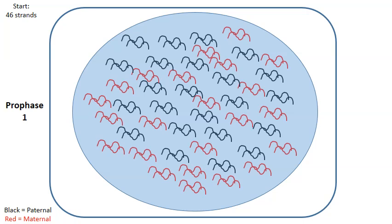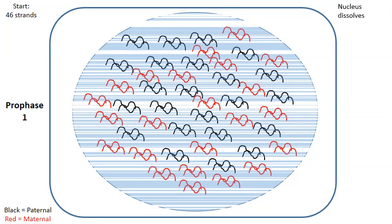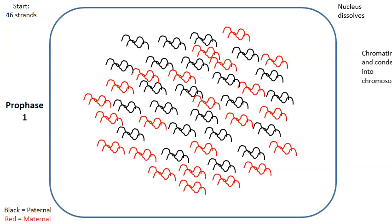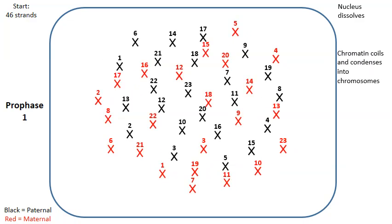So let's start with prophase number one of meiosis number one. So the nucleus will dissolve and what happens next is the chromatin will coil into chromosomes and I've numbered them. If you look closely there are two chromosome 3s, one in black, one in red. There are two chromosome 12s, one in black, one in red. There's two of each chromosome number, one in black, one in red.